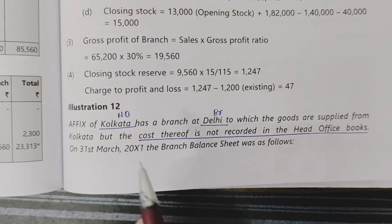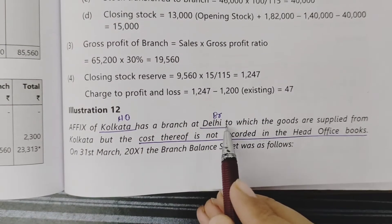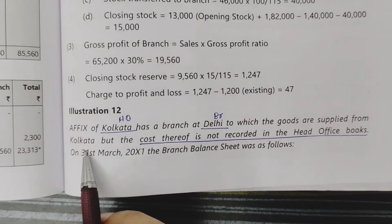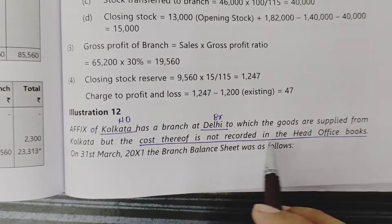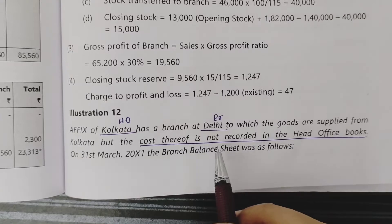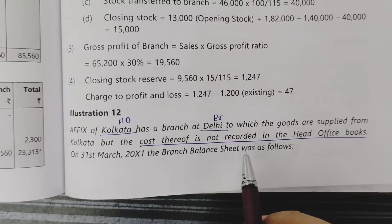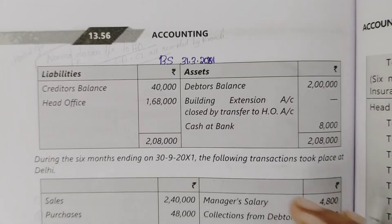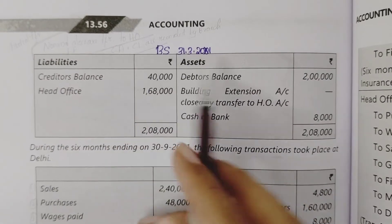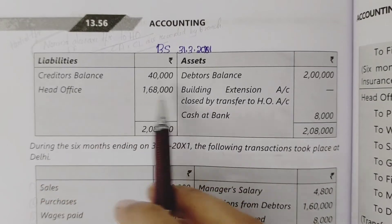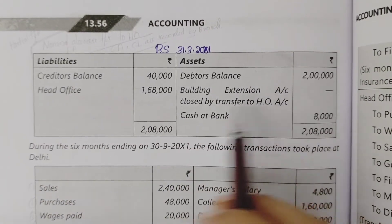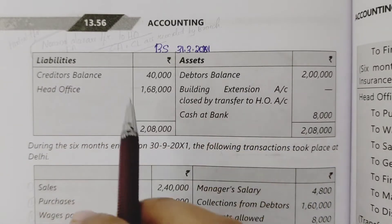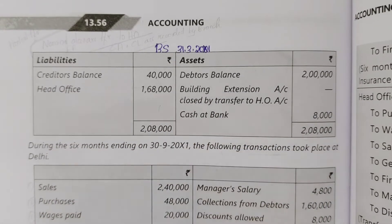Illustration 12: A firm in Kolkata has a branch in Delhi, to which goods are supplied from Kolkata, but the cost thereof is not recorded in the head office books. On 31st March, the branch balance sheet was prepared. The branch balance sheet includes creditors, head office account, debtors, balance, billing, and extension account closed by transfer to head office, and cash at bank — this is a partial balance sheet.